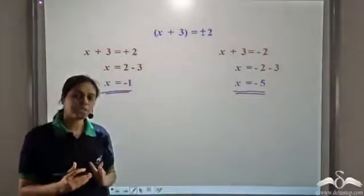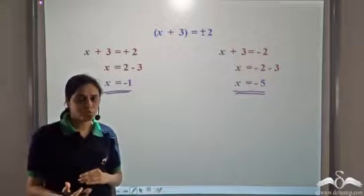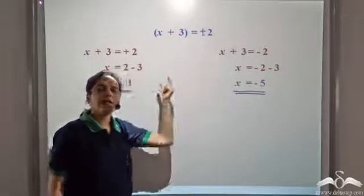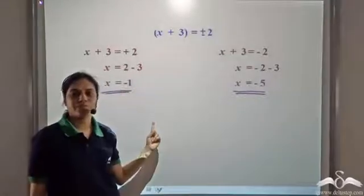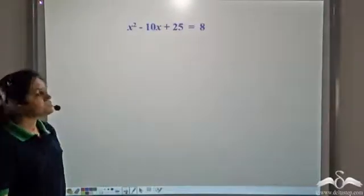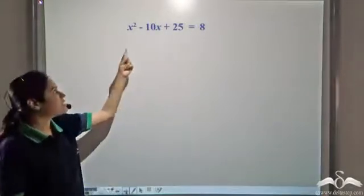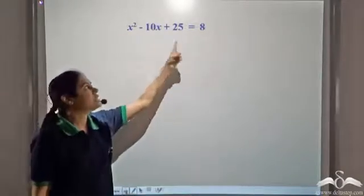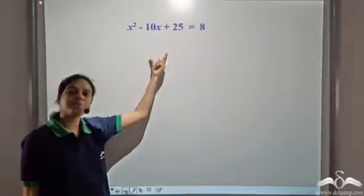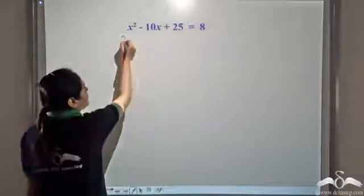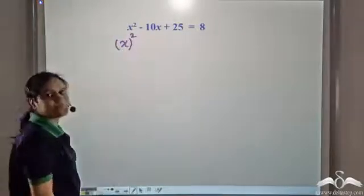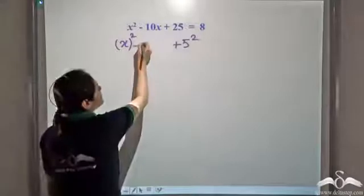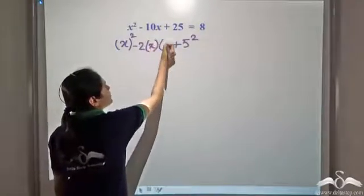We had perfect square terms on both sides of that equation, so we took the square root of both sides, considered the positive and negative sign on the right hand side, and solved the two equations to get the solution. Now look at this new equation: x² − 10x + 25 = 8. One way to solve it is to bring 8 to the left hand side and simplify. But observe that the left hand side can be factored.